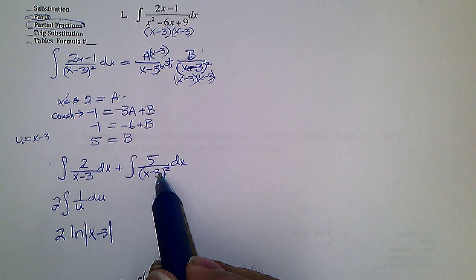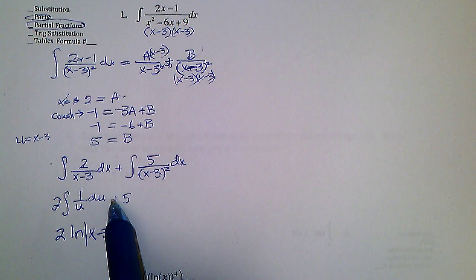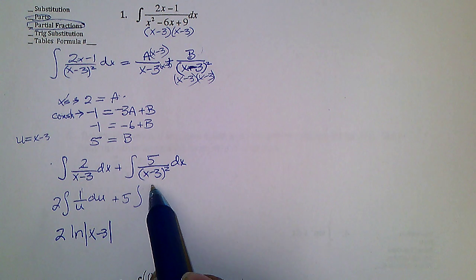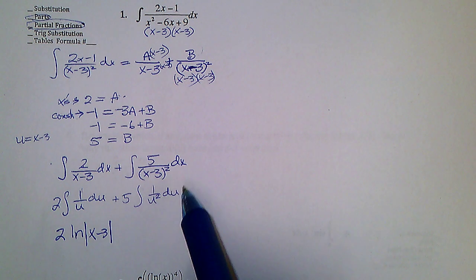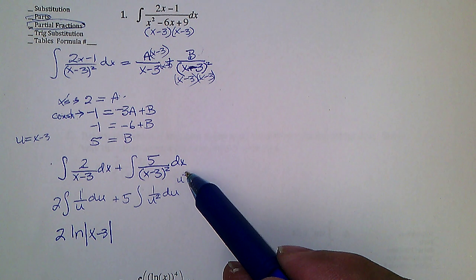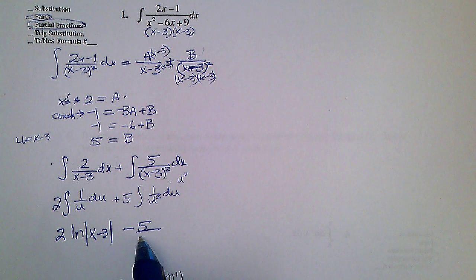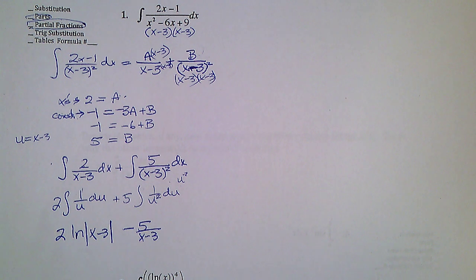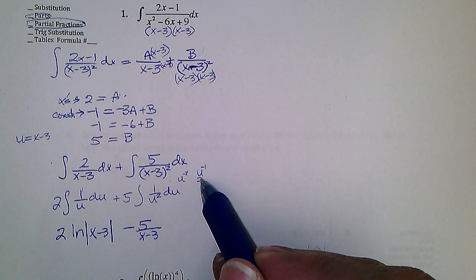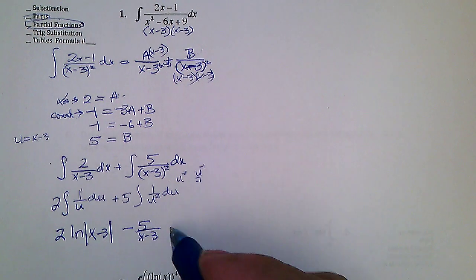For the second part, if you let u = x−3, you have 5 times the integral of 1/u² du. That's like u^(−2), so you raise it by 1 to get u^(−1) divided by −1, giving −5/u, and u is x−3. So the answer is 2 ln|x−3| − 5/(x−3) + C.